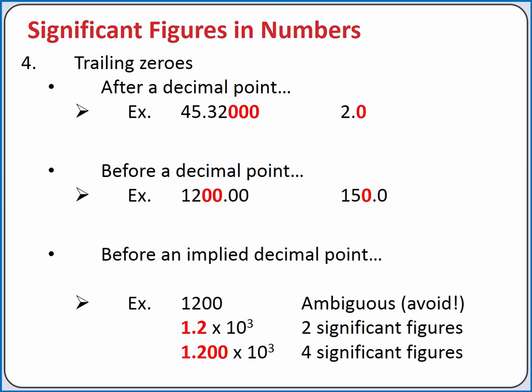For example, if we reported it as 1.2 times 10 to the third, we would have two significant figures. Or if we reported it as 1.200 times 10 to the third, we would have four significant figures.